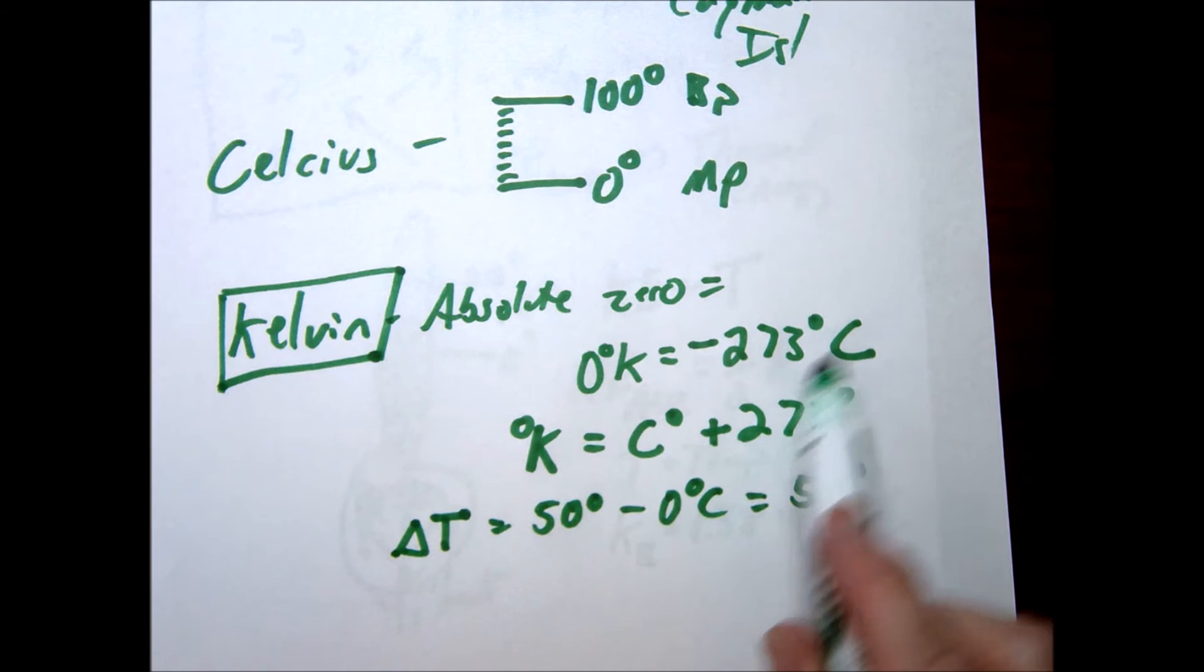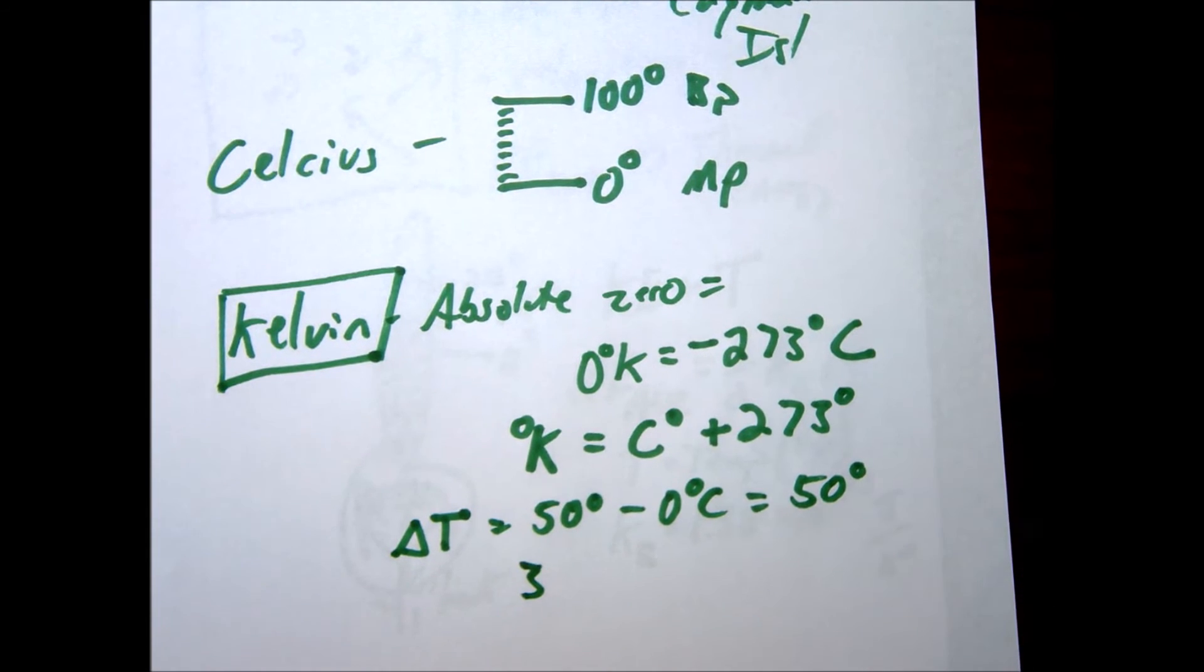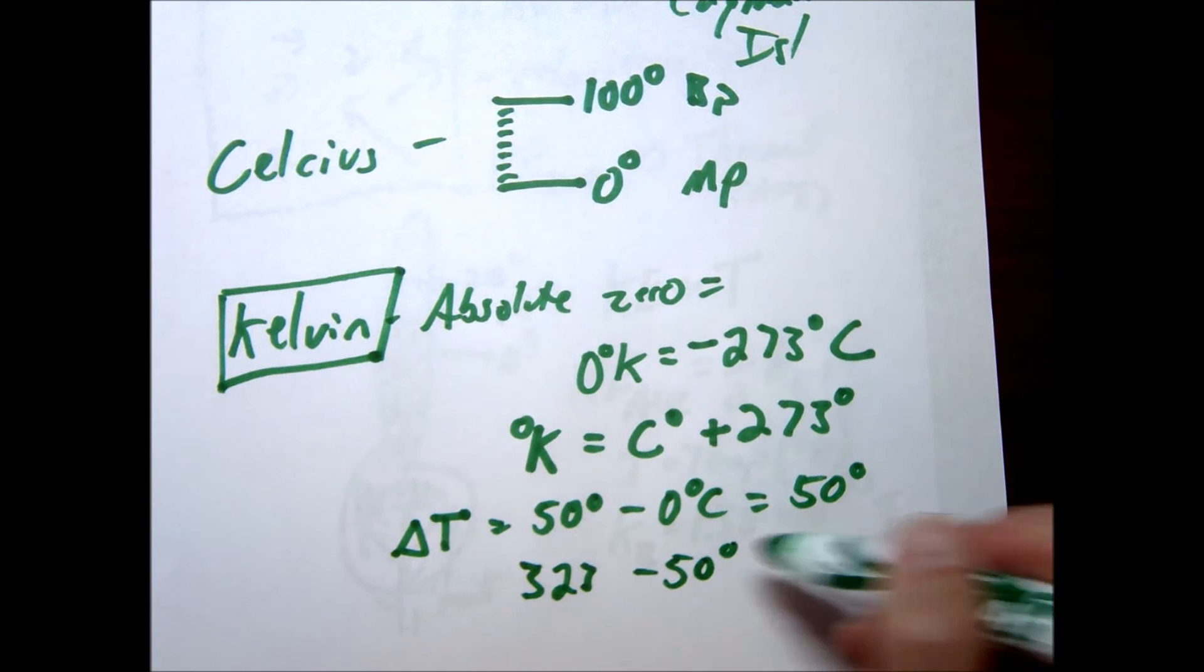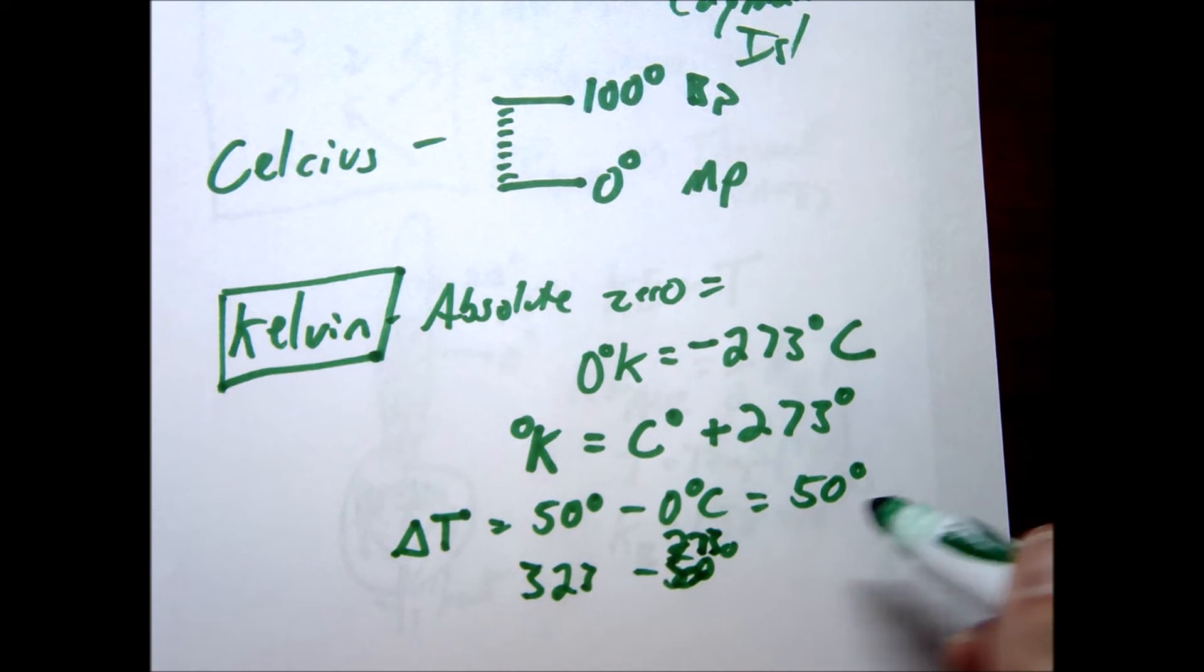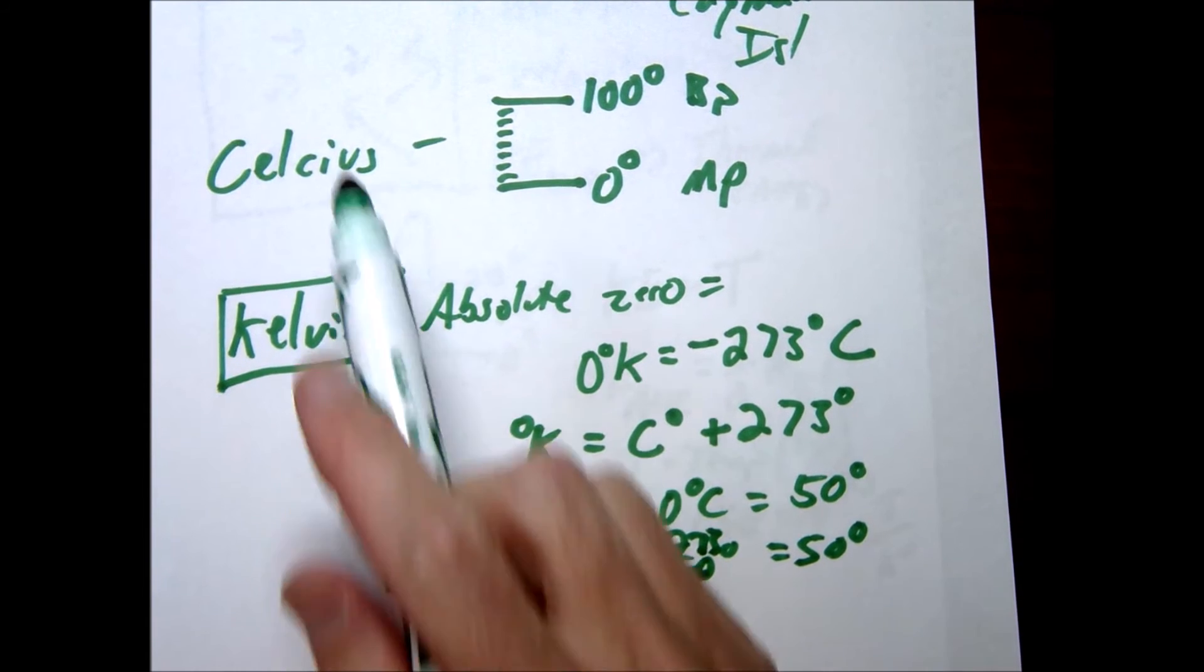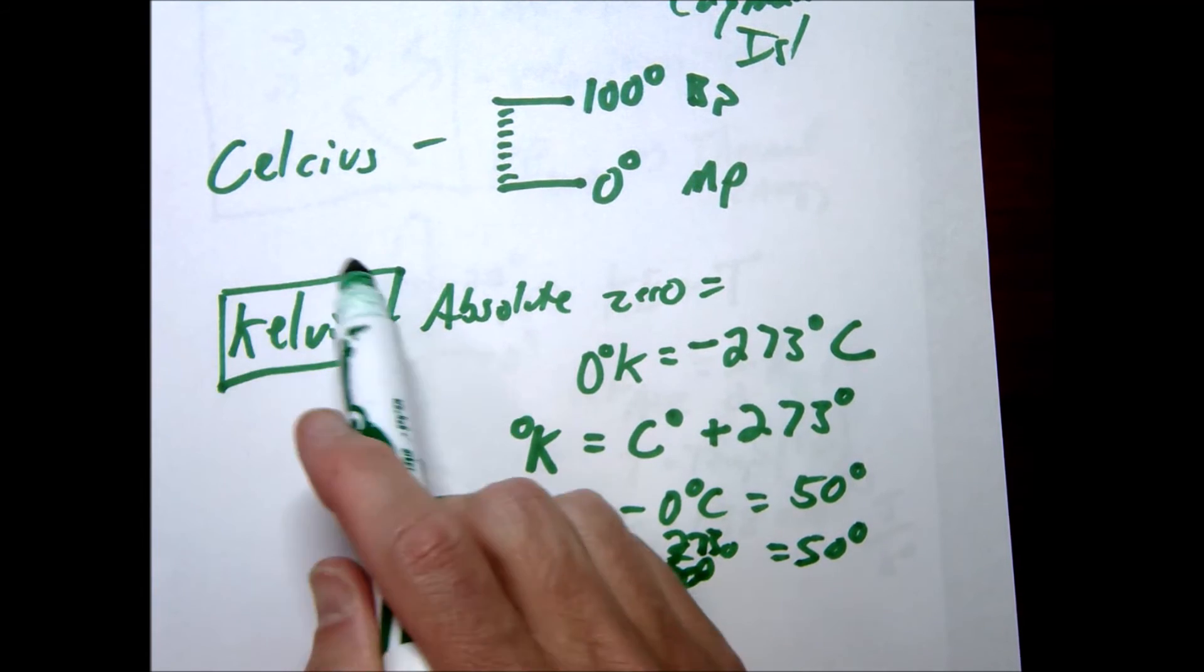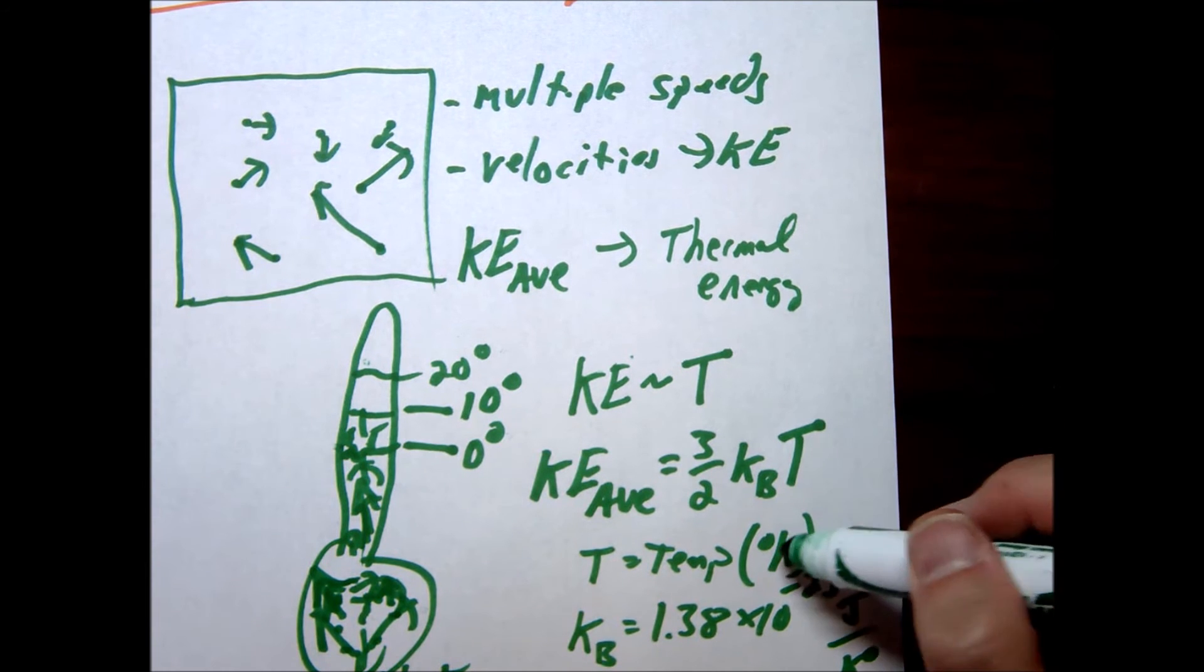Now because we're just adding 273, so this would be in kelvin, this would be 323 minus 273 degrees. So if you do use a delta, you can use either the kelvin or the Celsius scale. But in general, we're going to be using kelvin when you just have like in this last equation, for example T, you would be using your kelvin degrees.